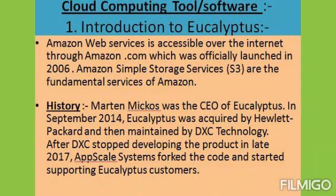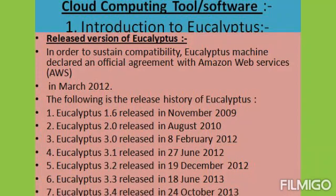Additional features include: can be installed and deployed from source code or DEB and RPM packages; internal process communications are secured through SOAP and AWS security; multiple clusters can be virtualized as a single cloud; and administrative features such as user and group management and reporting.